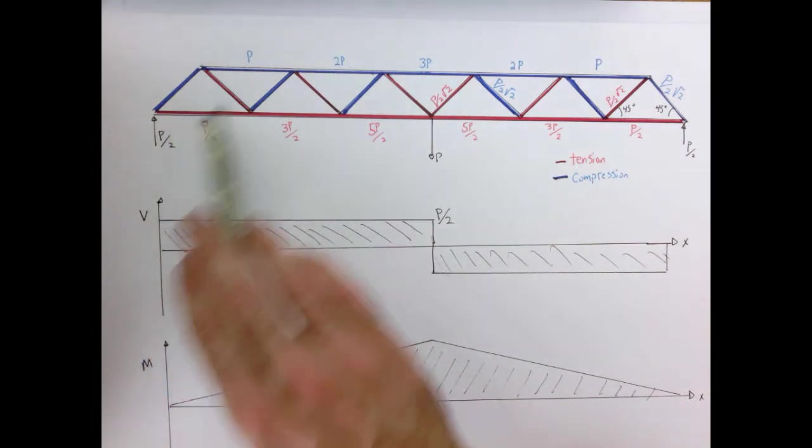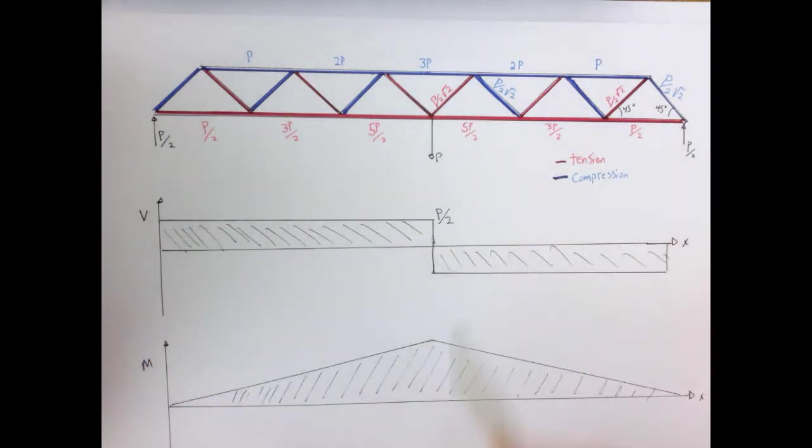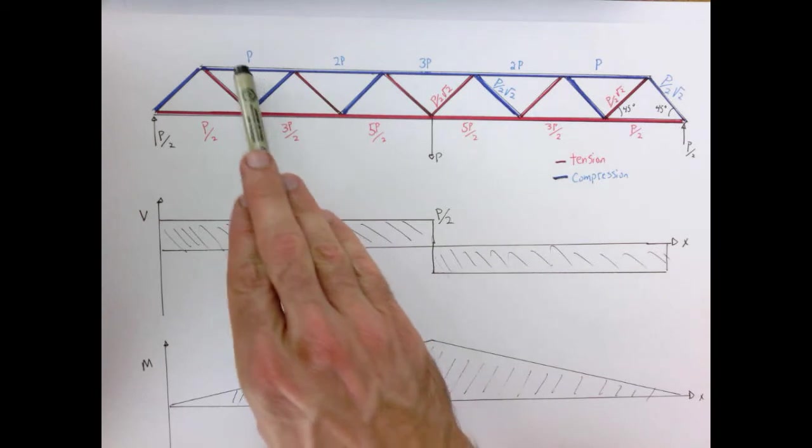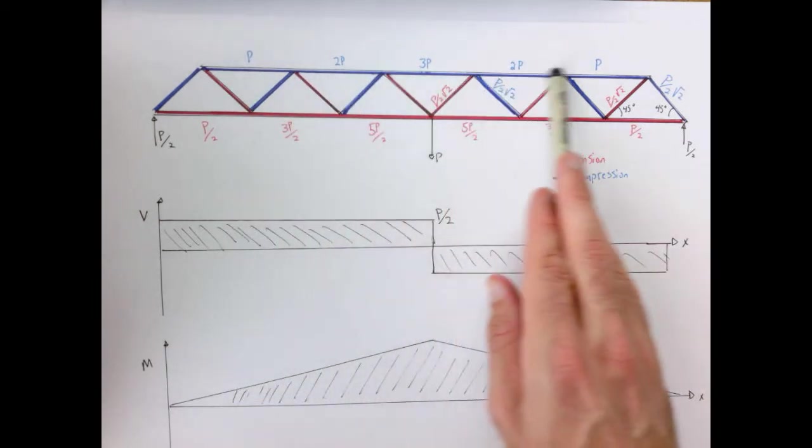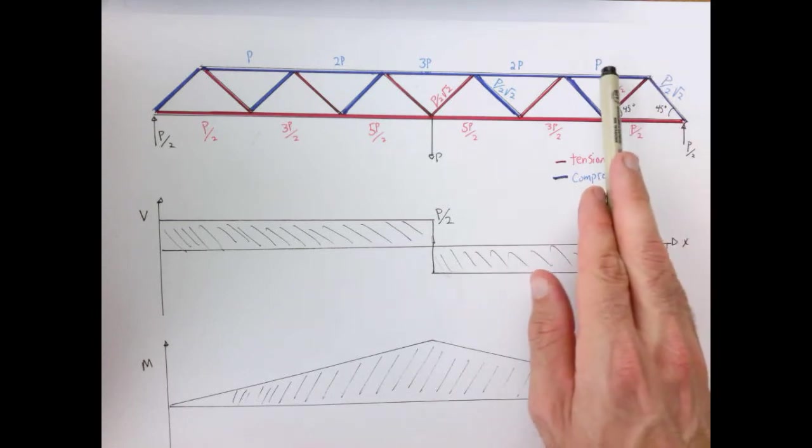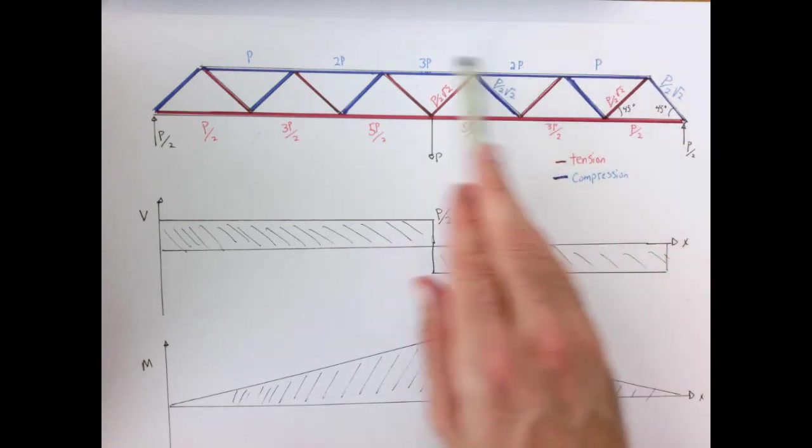Our structure up here, I've expanded it to be a little bit longer than the one we solved in the video, but it's essentially the same structure. So I've color-coded the members blue if they're in compression. The top is all in compression, and the load in the members increases p, 2p, 3p.